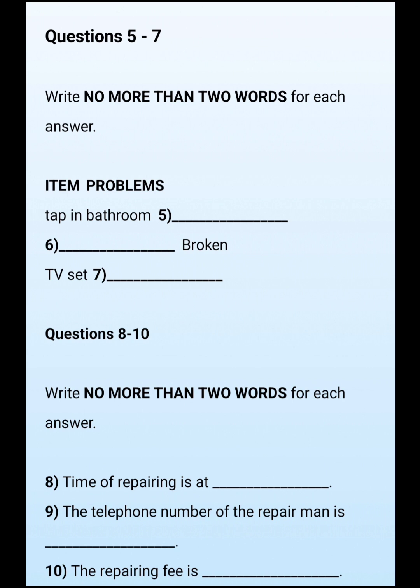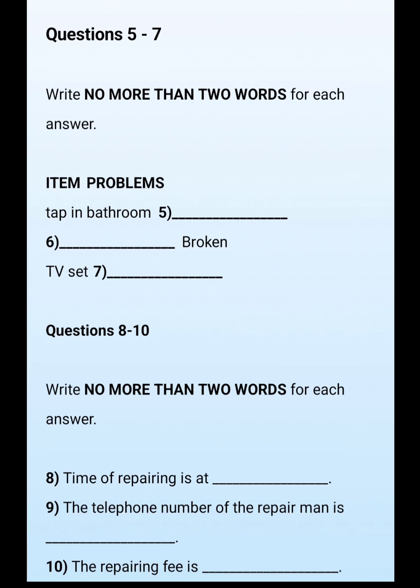Okay, we will get a repairman over to you tomorrow afternoon. Are you available at that time? I will return to the flat at about four o'clock. So how about five o'clock? Fine. You can contact the repairman if your time will be changed. Okay, his phone number is 6543 3747.